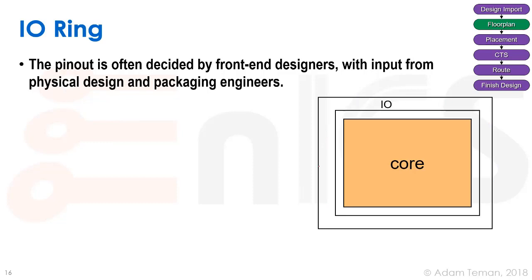The IO ring: IOs are often put in a ring around the chip — at least in wire bond design, which we'll discuss later. Generally, the IO ring lets us drive the voltage of the IOs, which is often higher than the core voltage, distributing things around the chip and connecting to the package. The pinout is often decided by front-end designers based on system-level requirements — for example, DDR pins on one side and Ethernet on another.